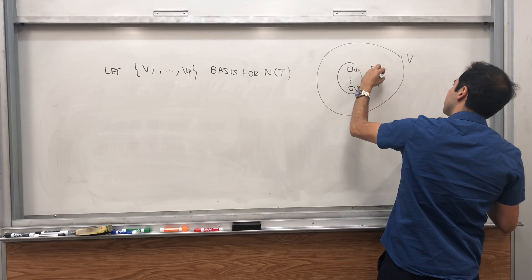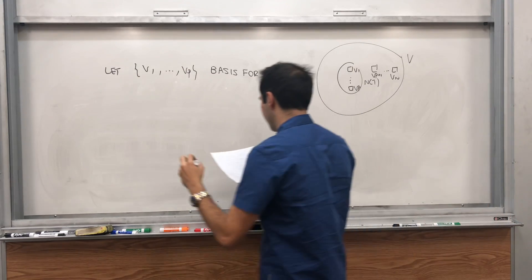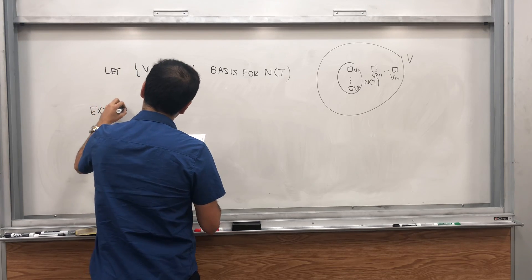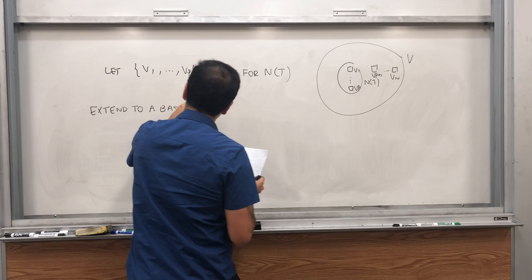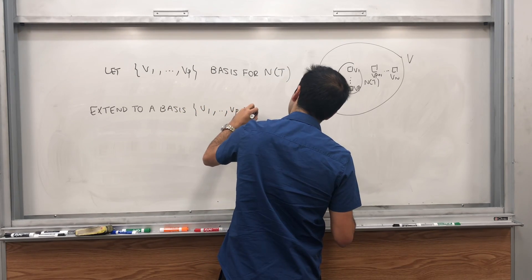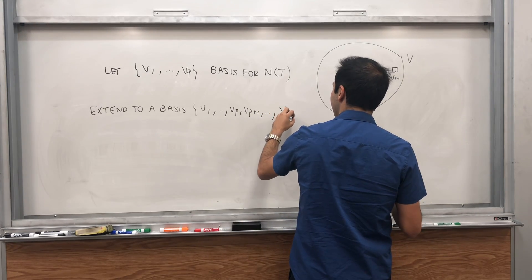so you see V1 up to Vp, and then Vp plus one dot dot dot. That's N of T. And let's extend it to a basis of V. So we have those other vectors, Vp plus one, up to Vn. Extend to a basis, again, V1 up to Vp, and then Vp plus one dot dot dot and then Vn of V.